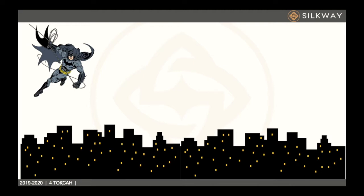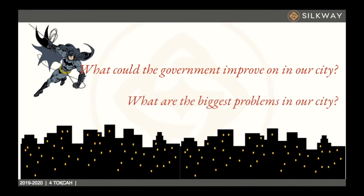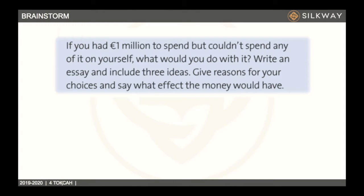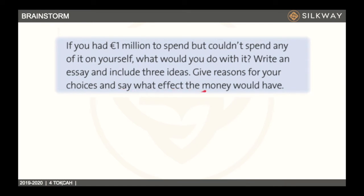Before we start, let's brainstorm a few things: what could the government improve in our city, and what are the biggest problems in our city? I would like you to think about these problems and then comment your opinions below. Now, if you had one million euros to spend but couldn't spend any of it on yourself, what would you do with it? Write an essay — include three ideas, give reasons for your choices, and say what effect the money would have.